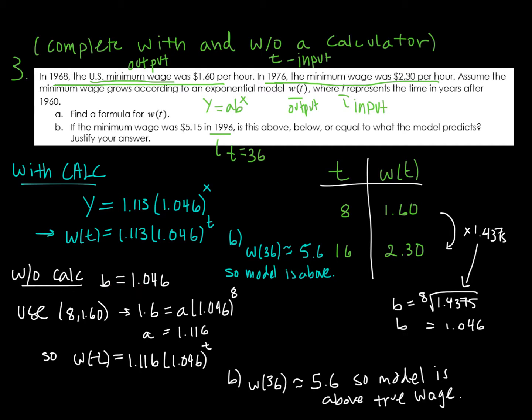So there's my base. And then I'm going to use one of the points to solve for a. I just chose this point here. I solve for a. And then this is my function if I do it by hand. Either way, I can answer the question, what will the minimum wage be according to my model in 1996? So t will be 36. And with the calculator, I get approximately 5.6 dollars an hour. And the model by hand, I also get approximately 5.6 dollars per hour. So the model approximates a little bit over what the actual minimum wage happened to be, which was 5 dollars and 15 cents.